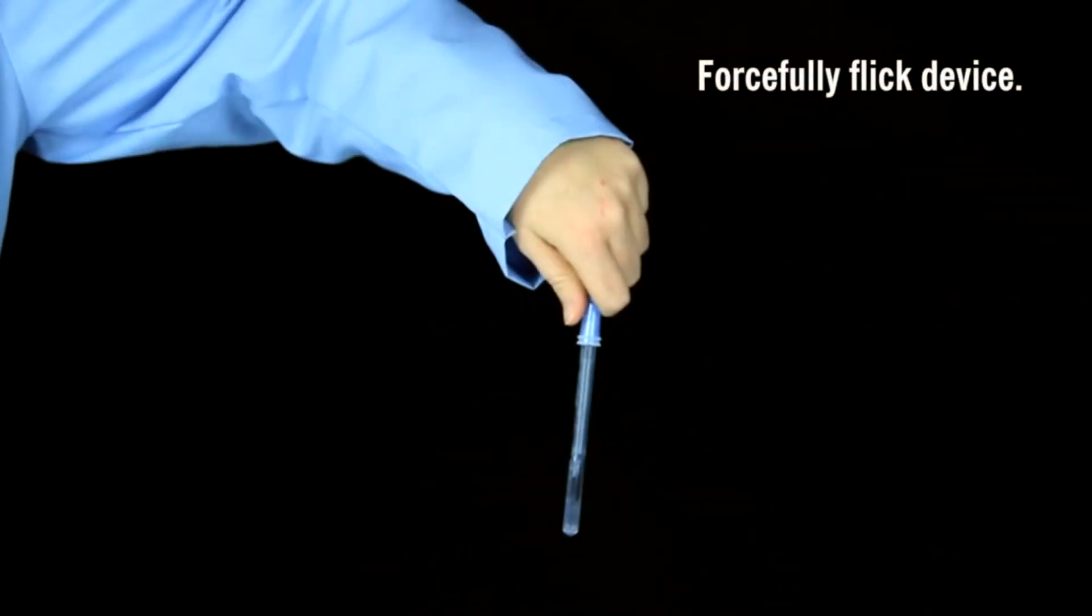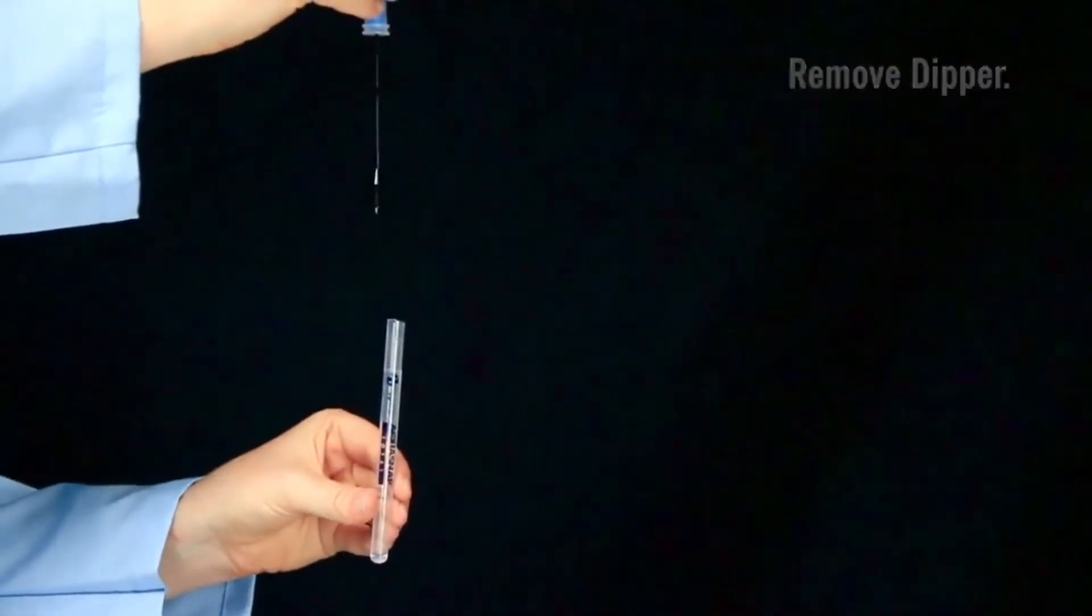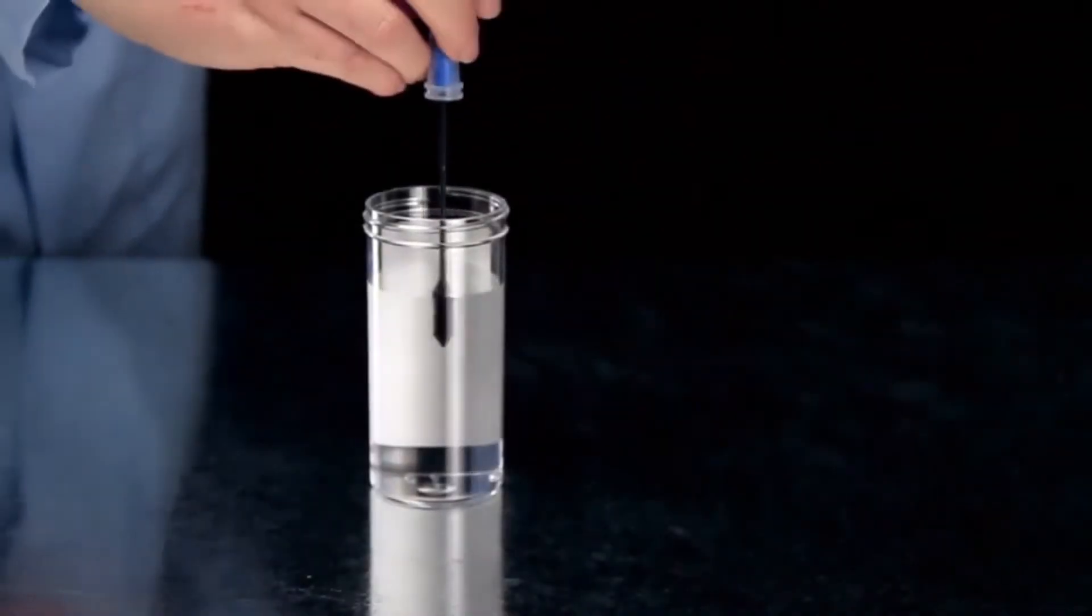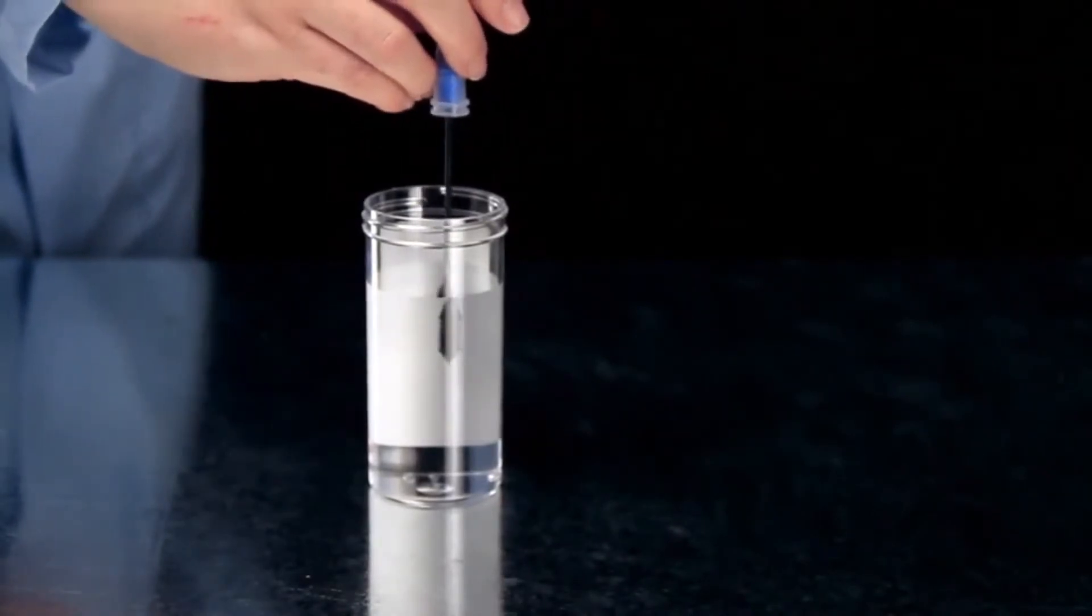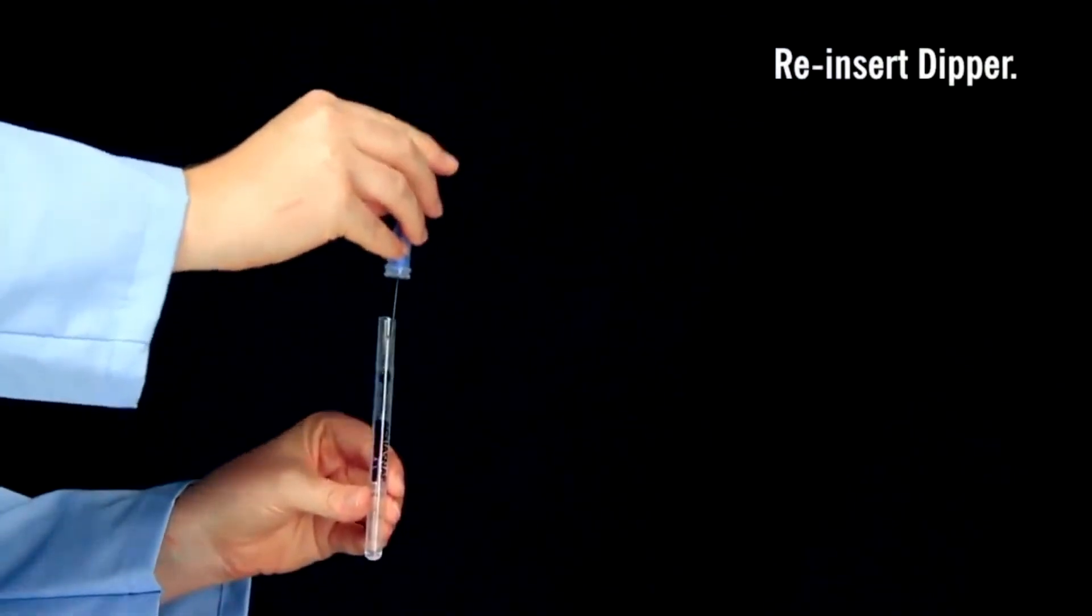Before opening the device, forcefully flick AquaSnap in a downward motion to release the extractant liquid from the dipper tip. You may now remove the dipper from the tube. Submerge the sample collection tip in the water sample for one to two seconds. Do not swirl. Replace the dipper in the tube.